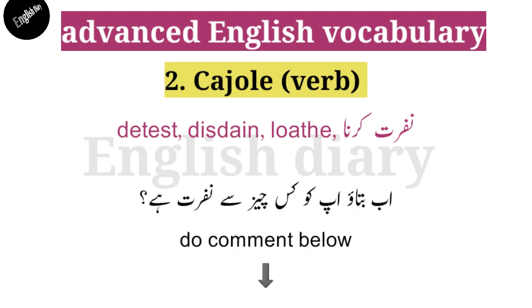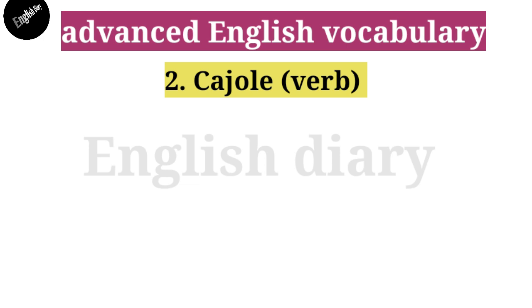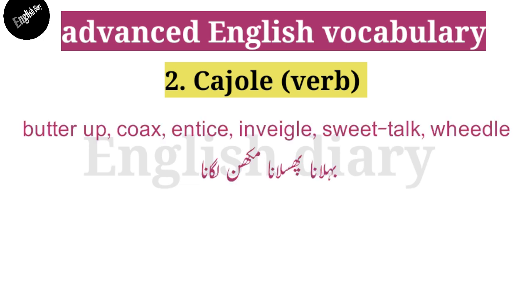Number two is 'cajole.' Cajole means behelana, fhuslana, makhan lagana, meethi meethi baatein karna — in other words: butter up, coax, sweet talk, etc.